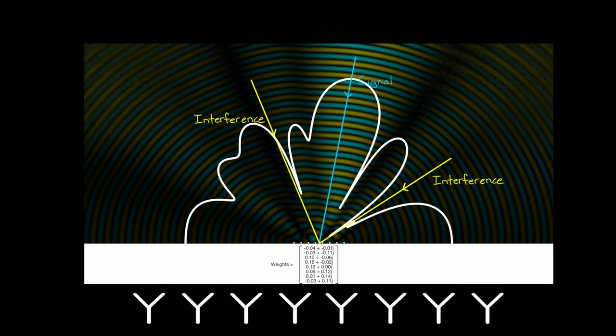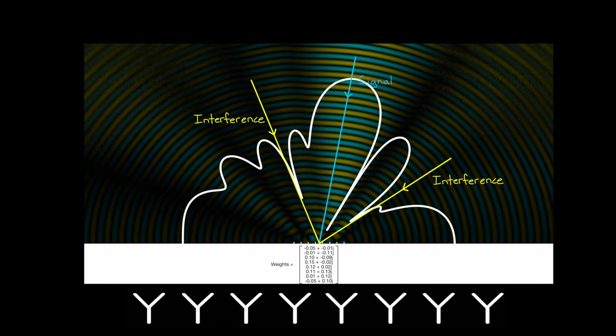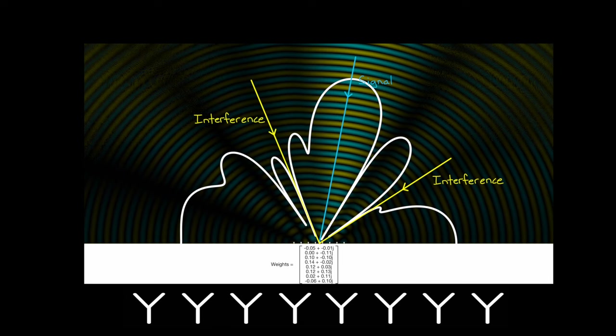If we later find out that there is another interference source from those directions, well, we can just update the environment data and then rerun MVDR to find new optimal weights that will minimize all of the different interferences together. In this way, MVDR allows the Beamformer to adapt to a changing environment.